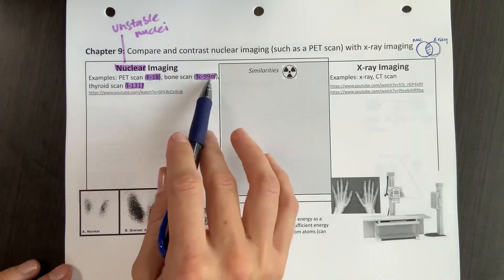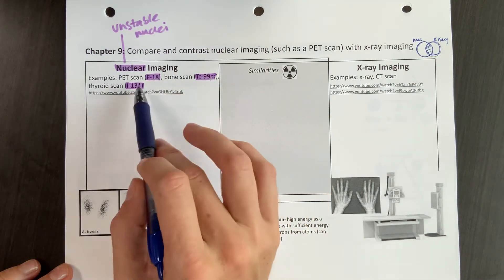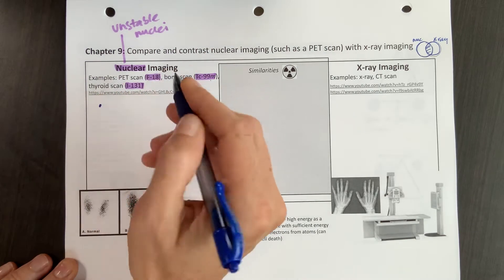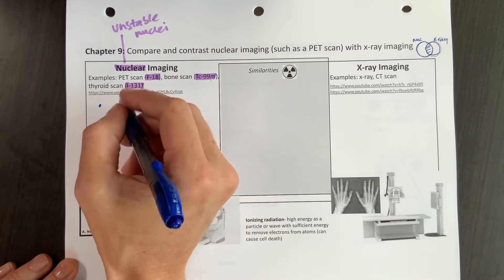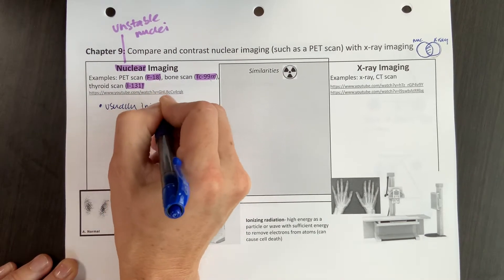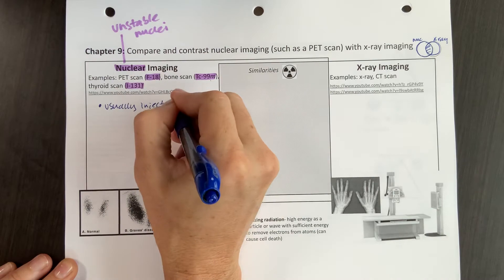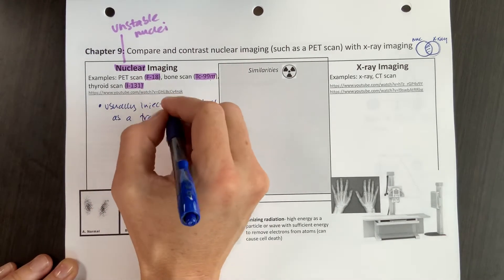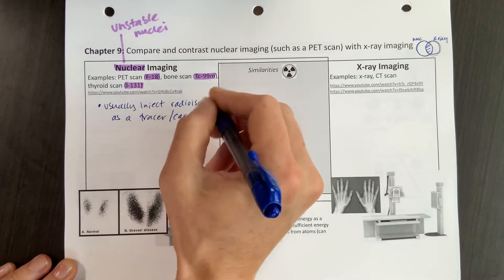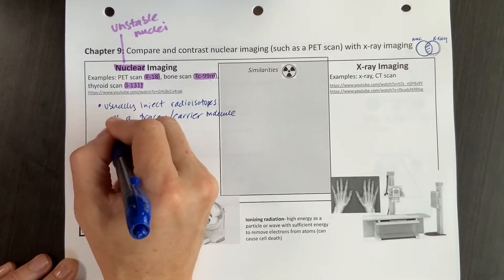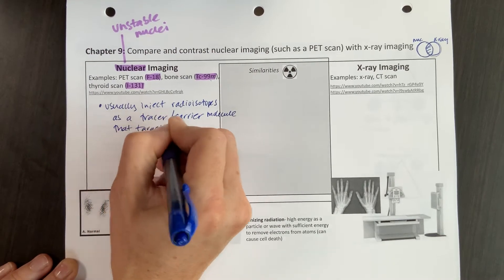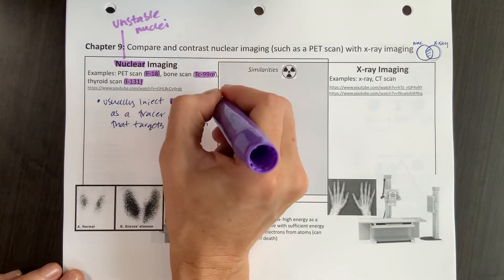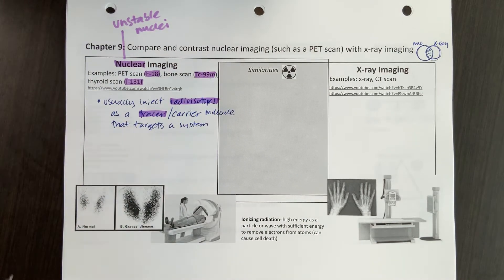Those are all unstable nuclei, and if you remember from chapter 2, these are the masses of those atoms. With nuclear imaging, you usually inject these radioisotopes as what we call a tracer — sometimes called a carrier molecule — that targets a specific system.